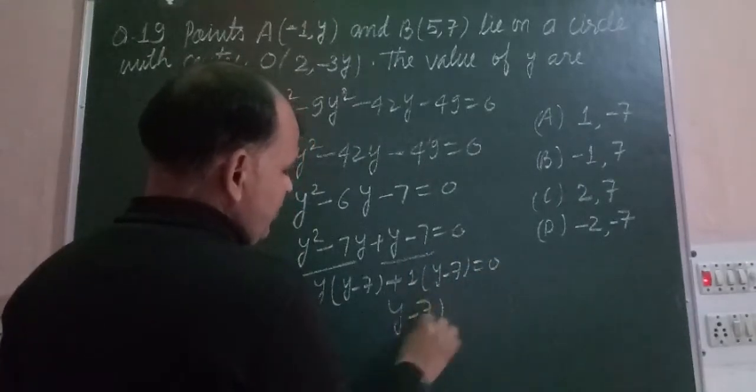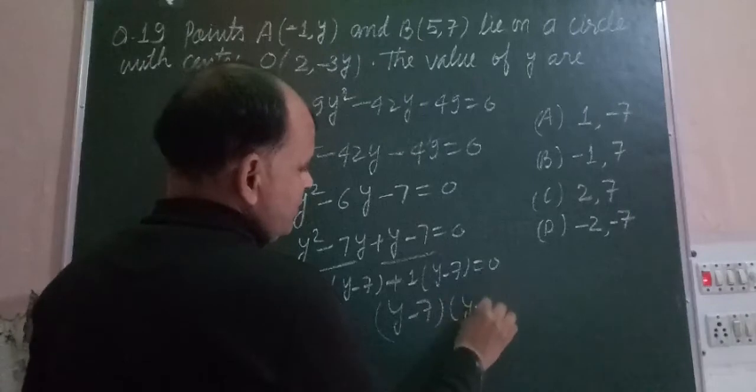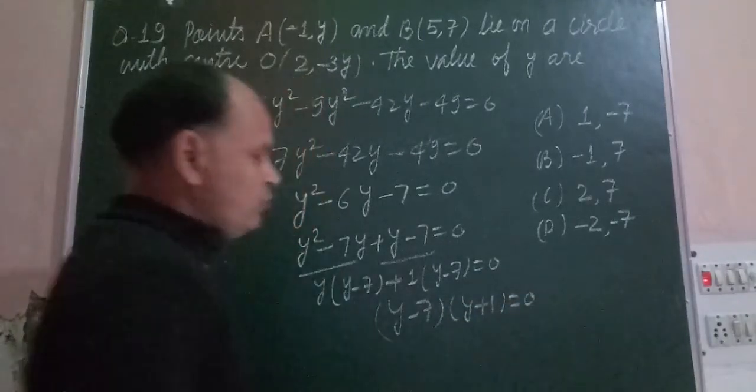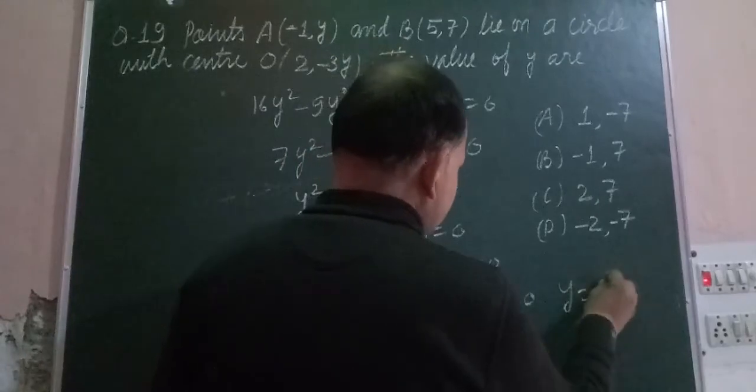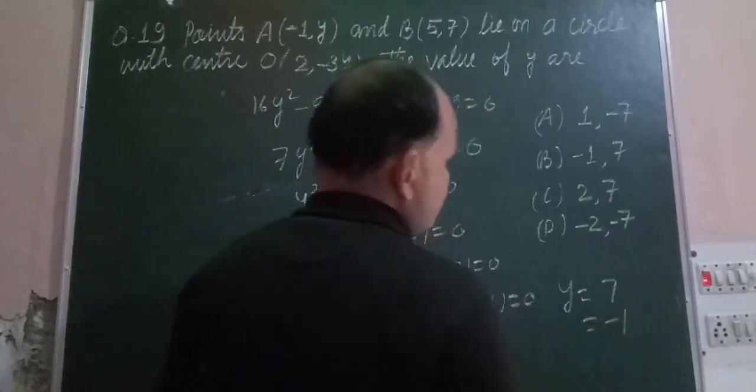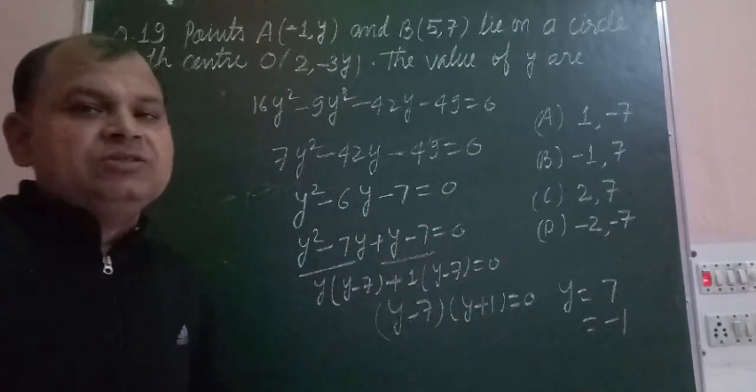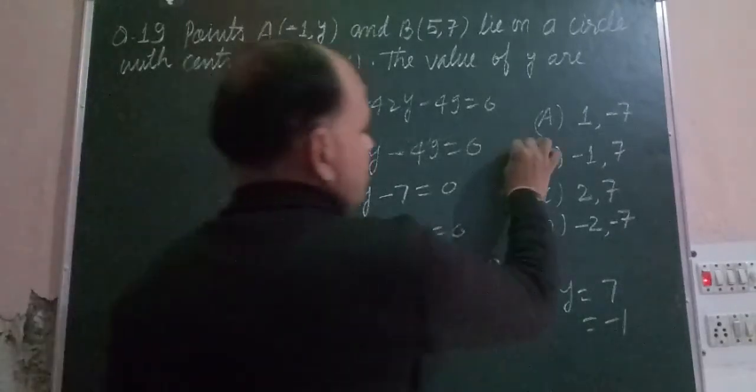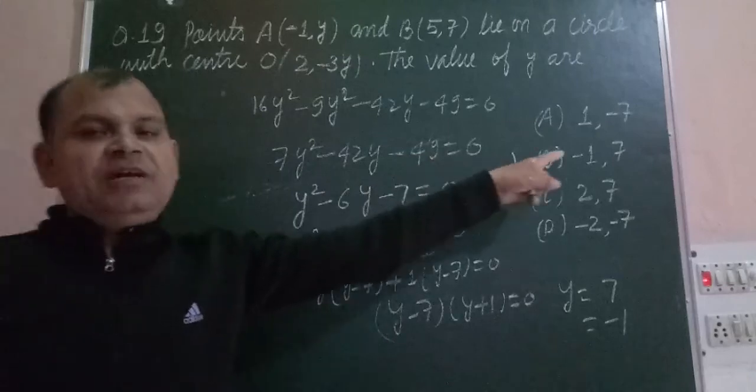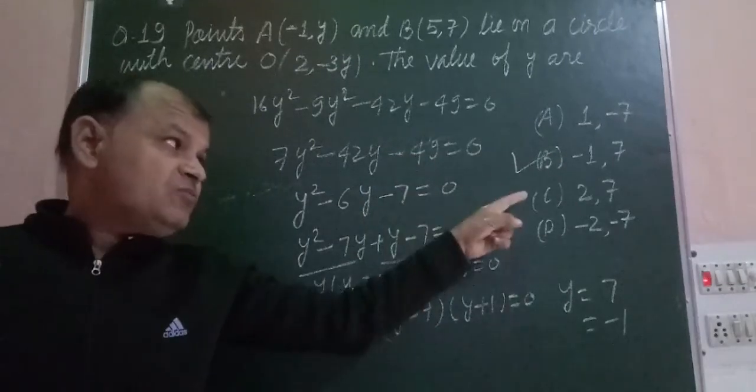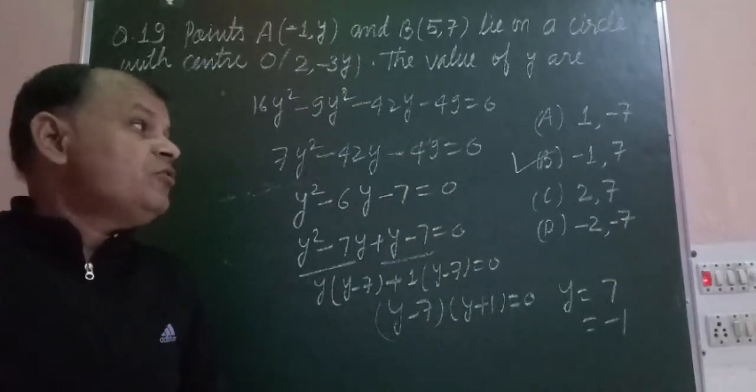The factors of this equation are (Y - 7) and (Y + 1) equal to 0. When we solve each factor, we get Y = 7 and Y = -1. So -1 and 7 are the solutions, and the values of Y are -1 and 7, which is found in option B.